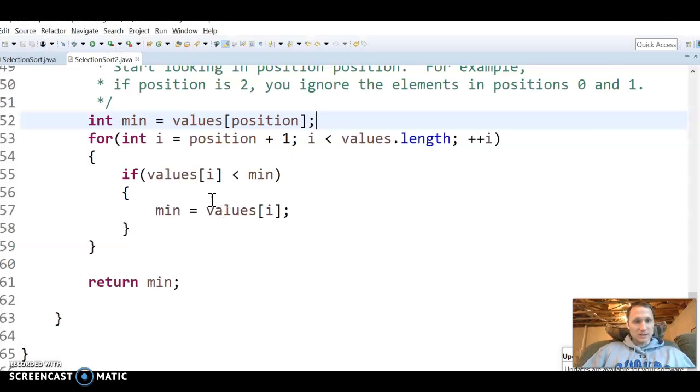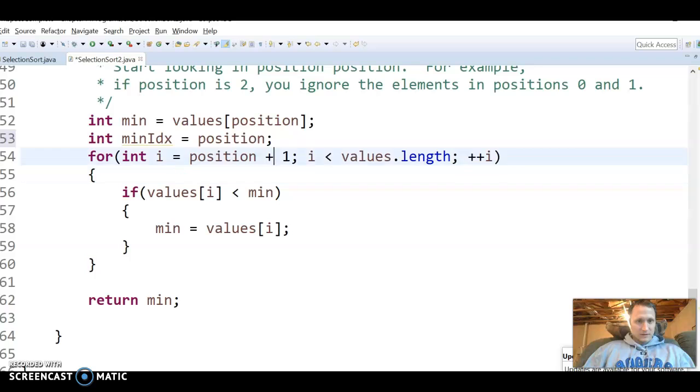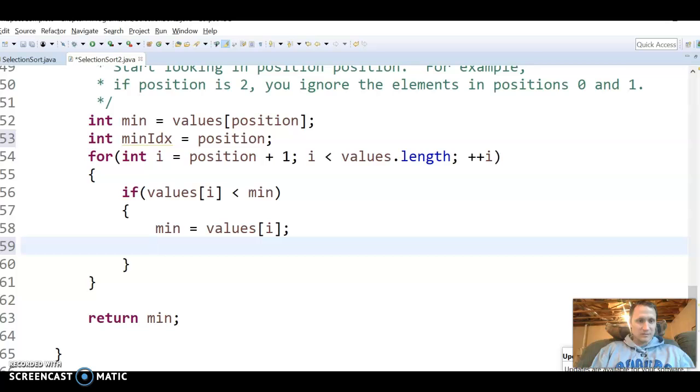And so we want to return the index. So the right way to do this then is to just do another variable here that keeps track of the min index. All right, and so I suppose we could start it off at—let's see, if our min is originally at position—we could say the min index is position. All right, and then down here when we find that it's less than the min, then we've got to update our min index.